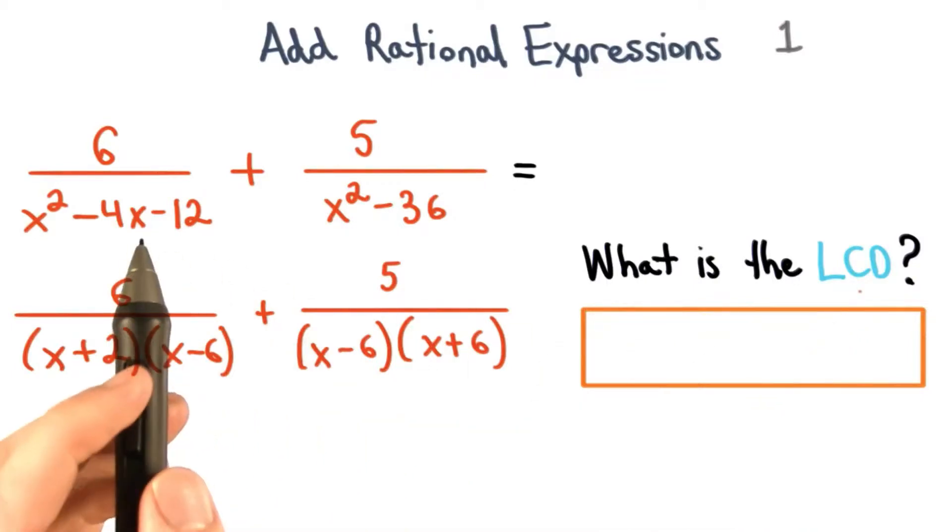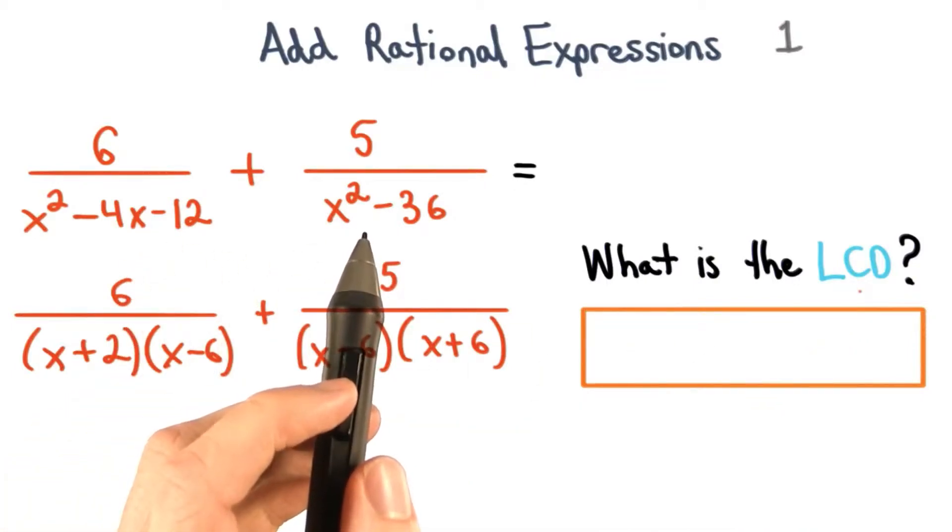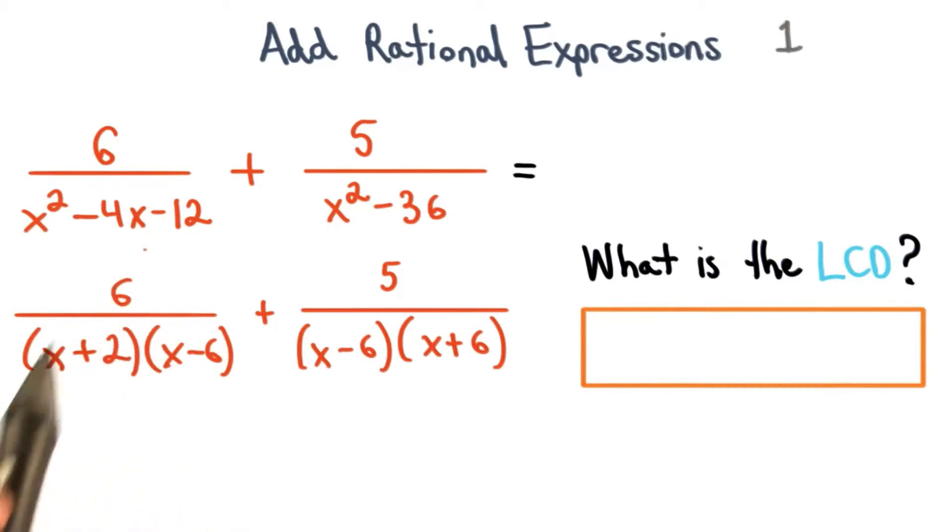We find the lowest common denominator by factoring each of these denominators first. The first denominator will have factors of x plus 2 times x minus 6, since factors of 12 that sum to negative 4 are positive 2 and negative 6.